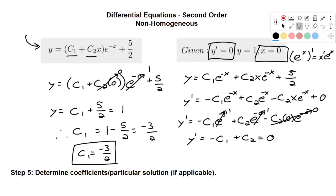Remember, we know what c1 is. It's negative 3 halves. So c1 times negative 1 will be 3 halves plus c2 equals 0. And therefore, c2 is negative 3 halves.